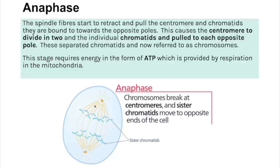In anaphase, spindle fibres retract and pull back towards the centrioles, pulling on the centromere and chromatids. This causes the centromere to divide in two, and individual chromatids are pulled to opposite poles of the cell — separating the chromatids, which are now called chromosomes. This stage requires energy in the form of ATP, provided by respiration from the mitochondria.